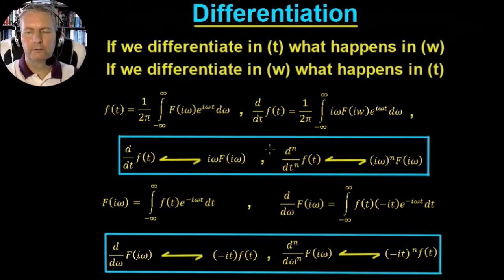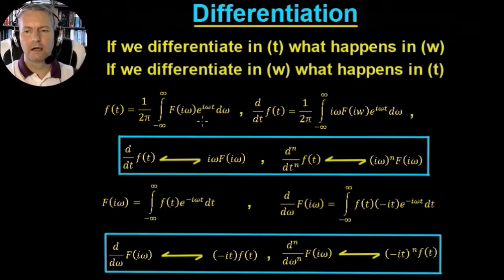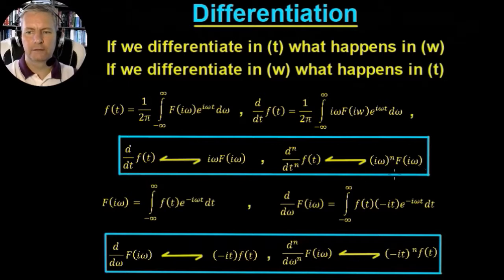Now if we were to take the nth derivative with respect to time, we would just continually differentiate, getting iω, iω squared, cubed, and so on. So we would get (iω)^n times f(iω). That's our second transform pair.